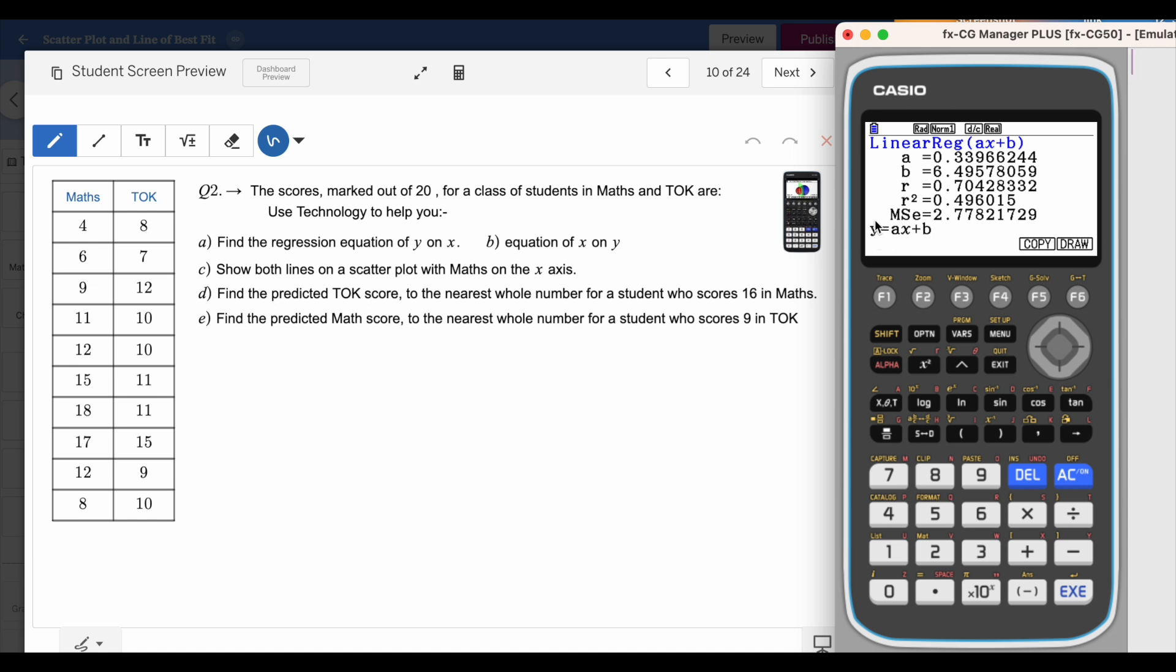What it does actually, this is actually giving you TOK scores dependent on maths. If you want to predict, if you read D part, find predicted TOK score to the nearest whole number for a student who scores 16 in maths. What I have to do, I'm going to click on draw and I want to evaluate for TOK. First answer is yes, can we find or not? The answer is yes, I can find TOK scores because TOK is on my y axis. In order to do that, you can actually go on shift and g solve. You will have this option called y calculate. Remember, in a regression, we can only calculate y values, dependent values, not independent.